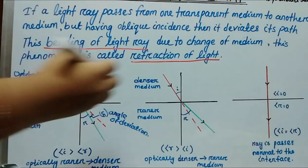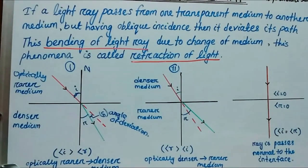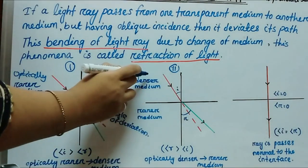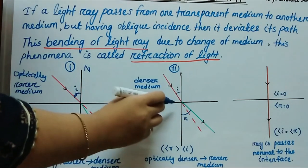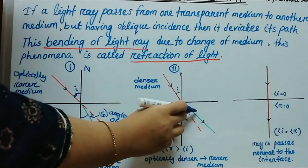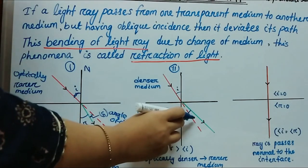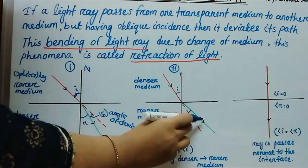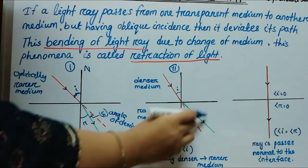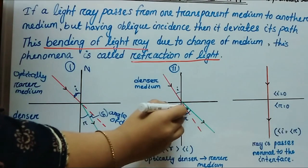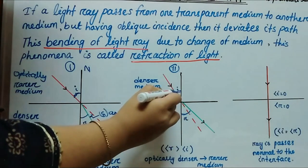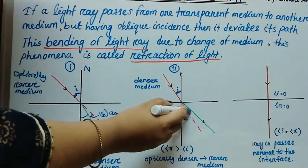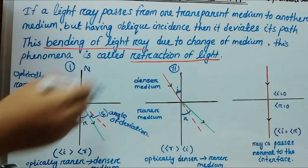Case 2: when a light ray passes from an optically denser medium to an optically rarer medium. In the rarer medium, it deviates from its actual path and goes away from the normal. In this case, the angle of refraction is greater than the angle of incidence.